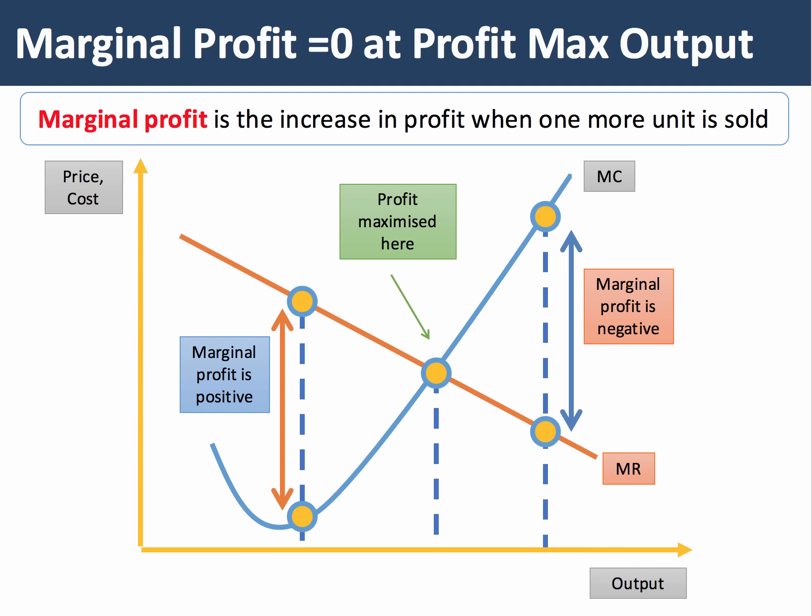Our next topic is marginal profit. Marginal profit is marginal revenue minus marginal cost. When the marginal revenue curve lies above the marginal cost, marginal profit is positive and the firm increases total profits by expanding output. However, when marginal cost is greater than marginal revenue, marginal profit is negative and total profits fall. Hence, profits are maximized when marginal revenue equals marginal cost, i.e., when marginal profit is zero.